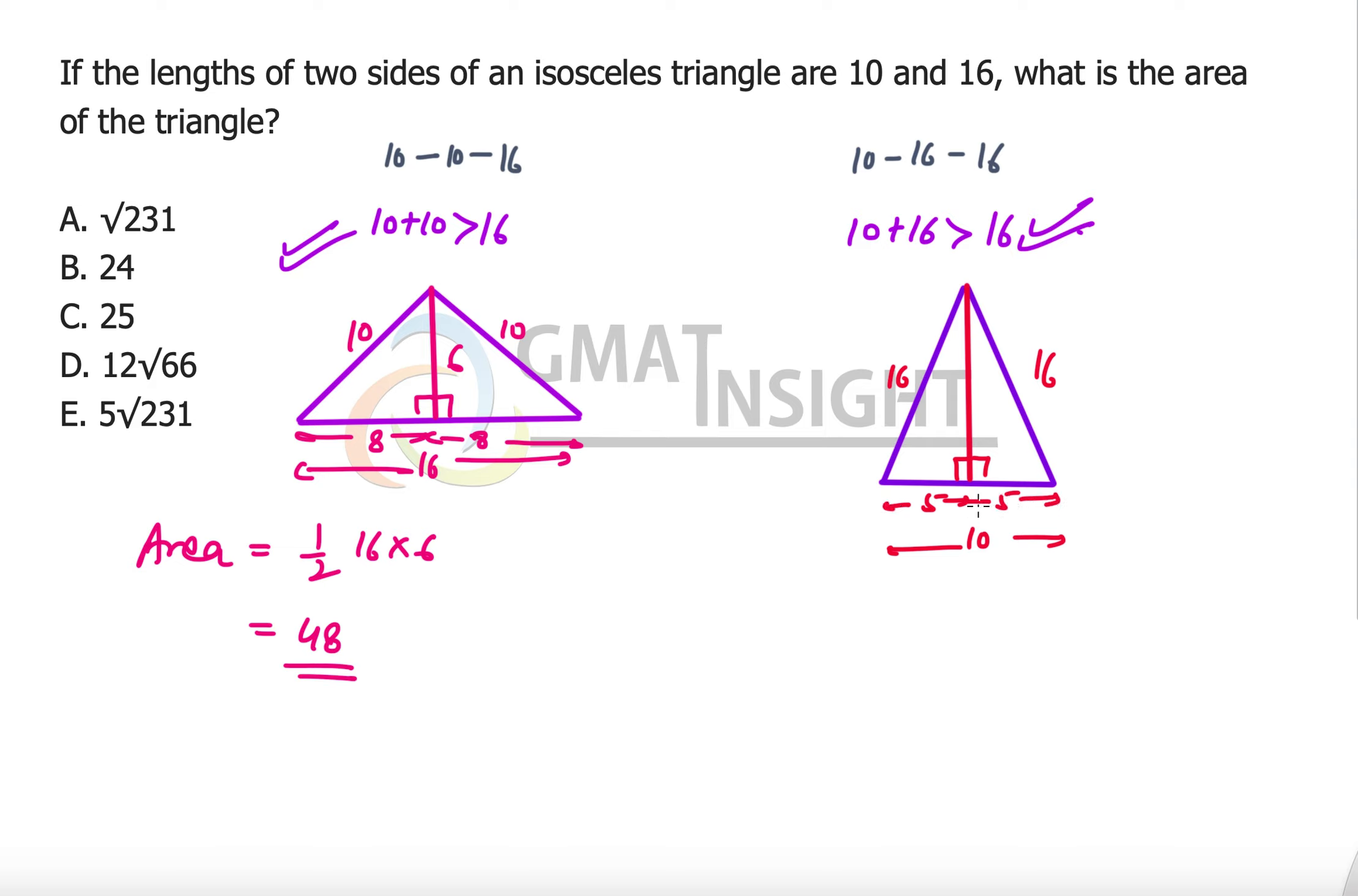Now we have to find the height, which is equal to the square root of 16 squared minus 5 squared, which is the square root of 256 minus 25. Let's quickly calculate it: 256 minus 25 is 231, so that is the square root of 231.